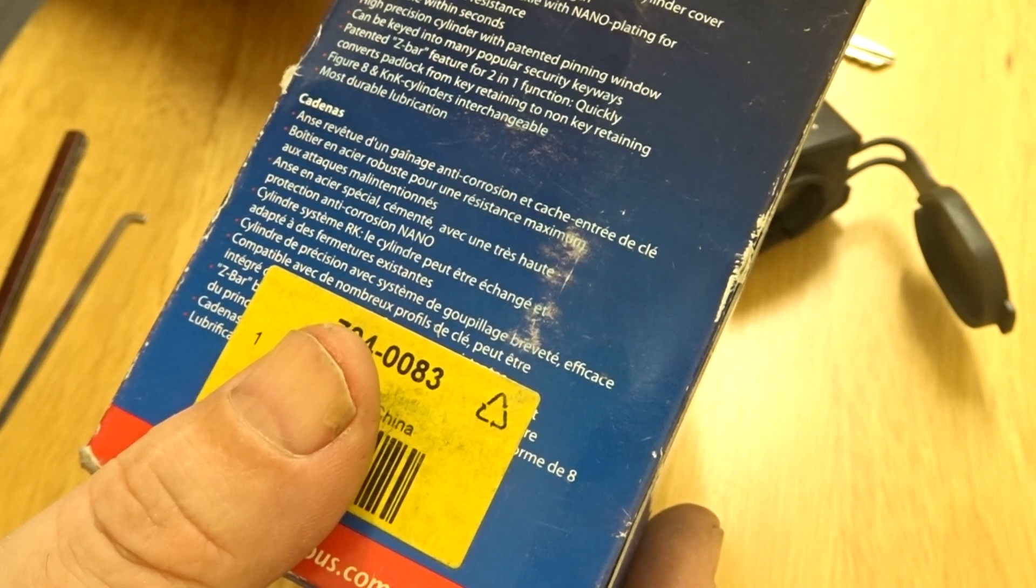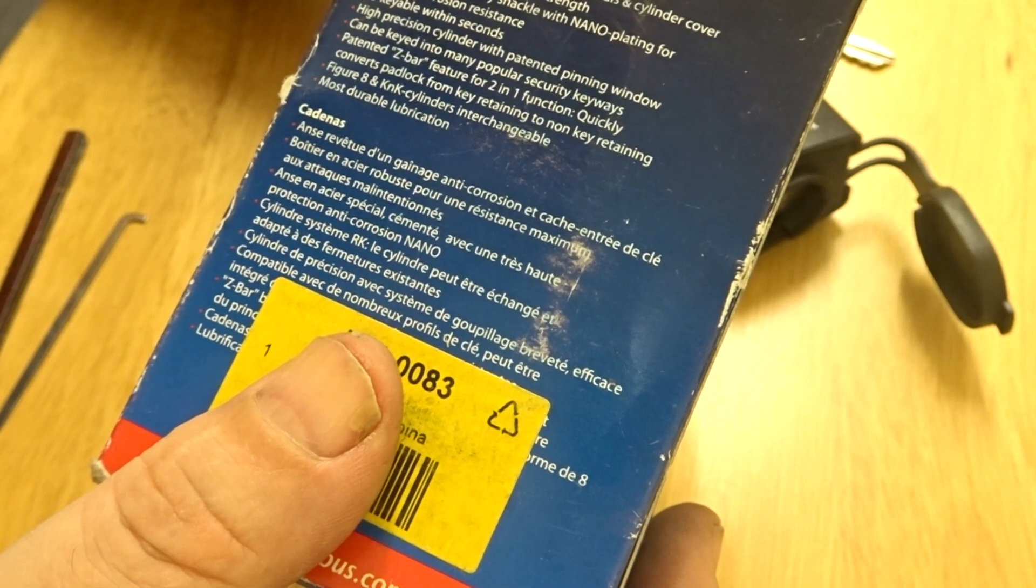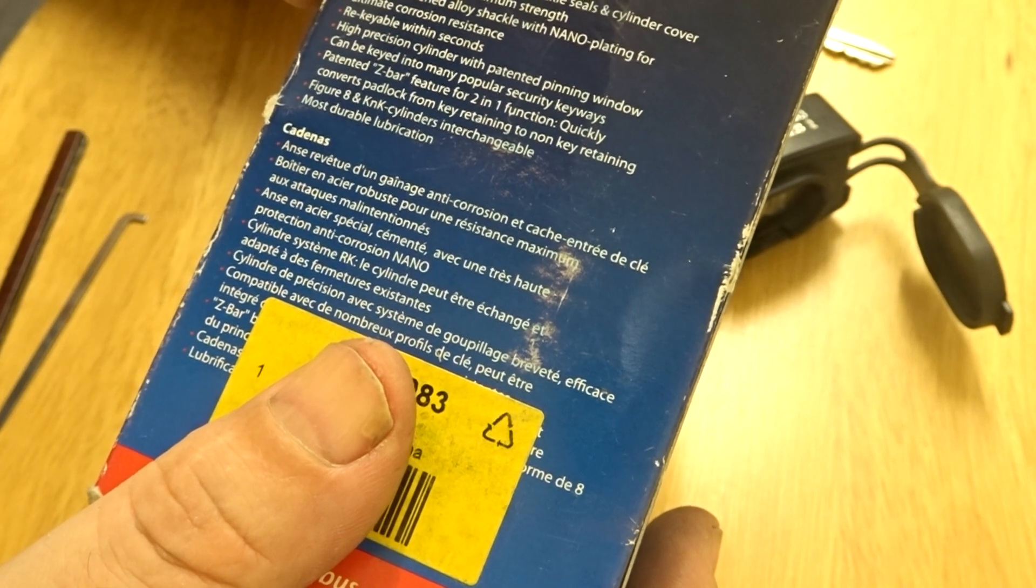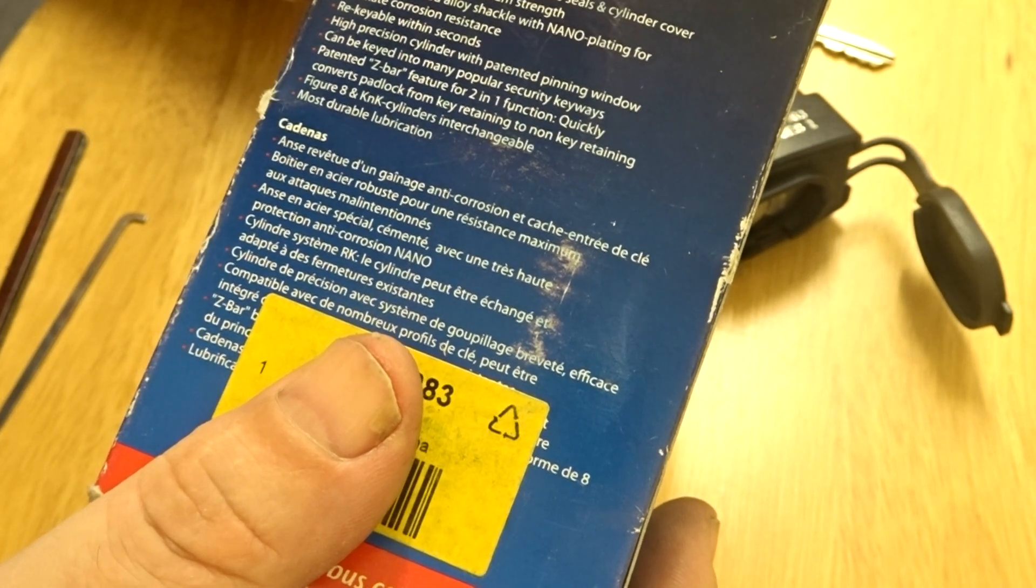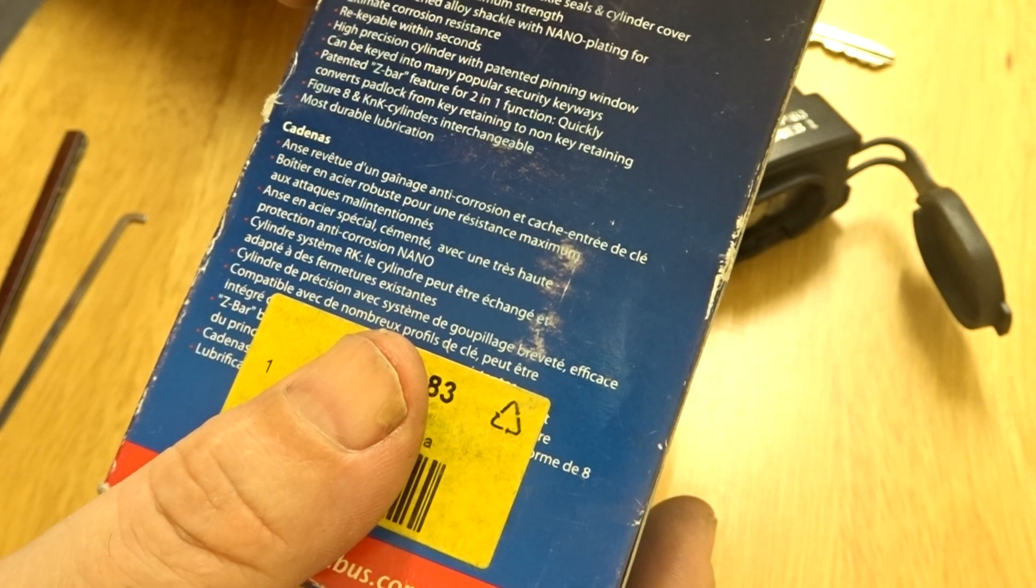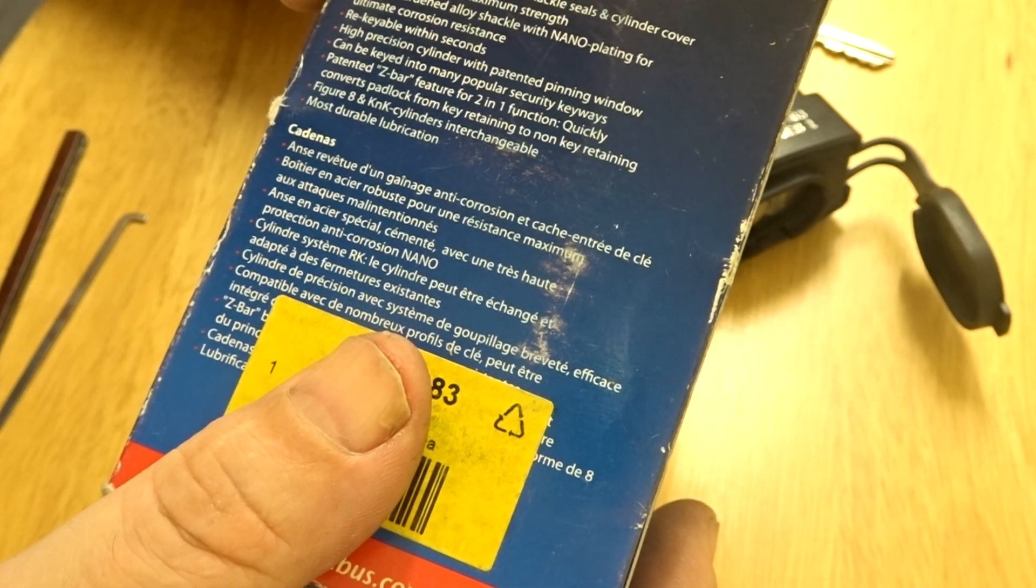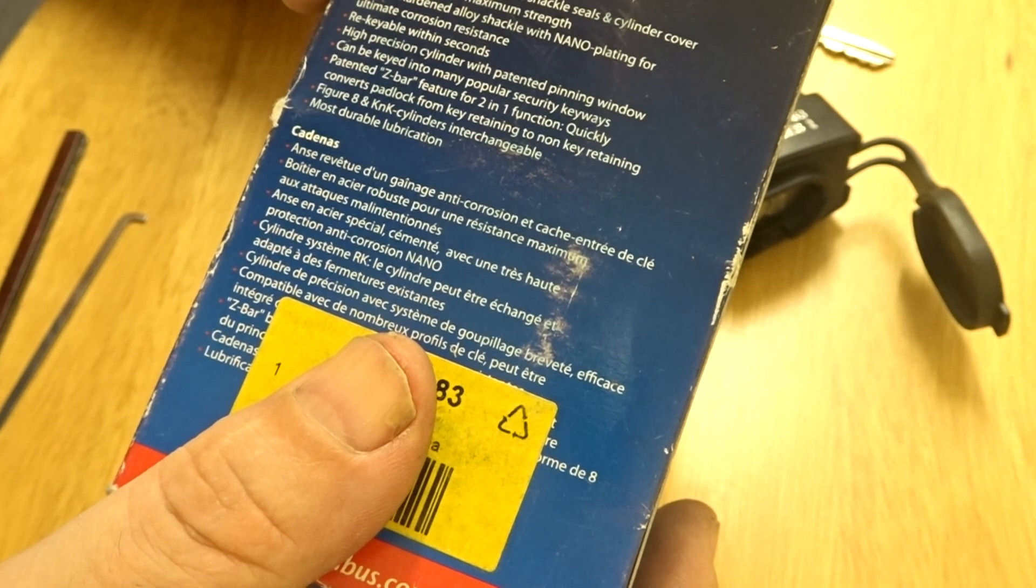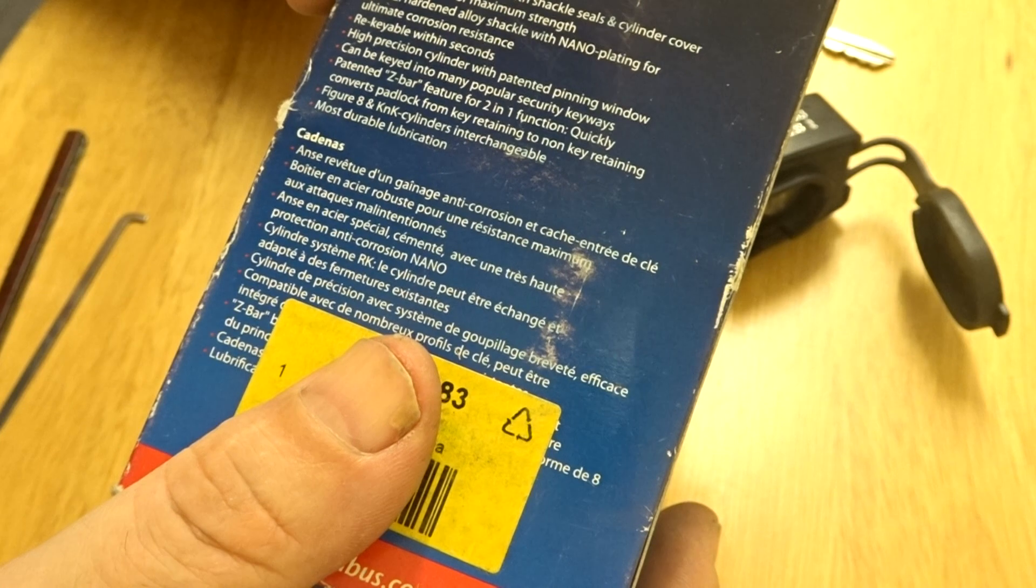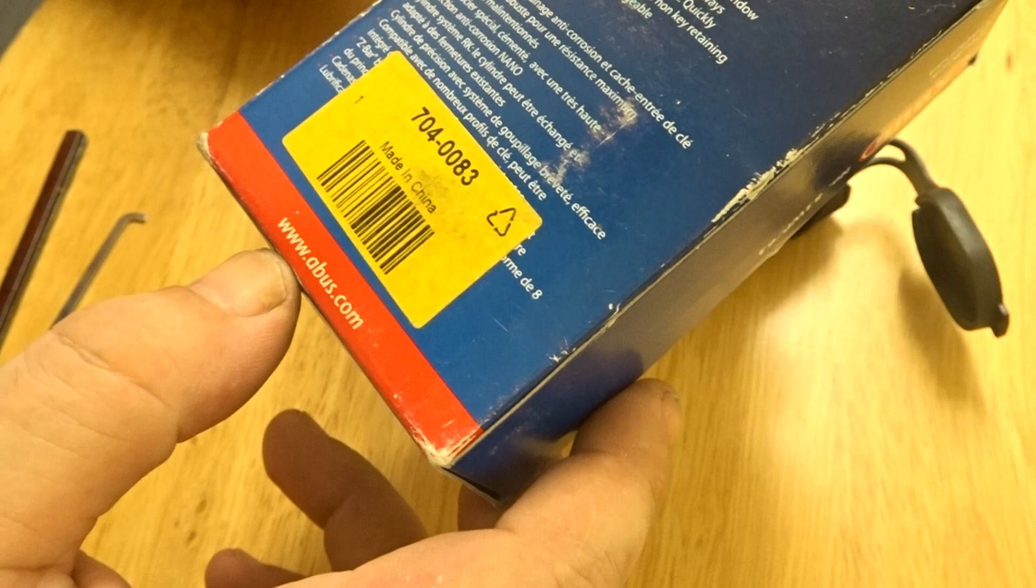Rekeyed within seconds. High precision cylinder with painted pin and window and can be keyed into many popular security keyways. Painted Z bar feature. Two in one function quickly converts padlock from key retaining to non key retaining. Figure eight and key in knob cylinders interchangeable for most durable lubrication.